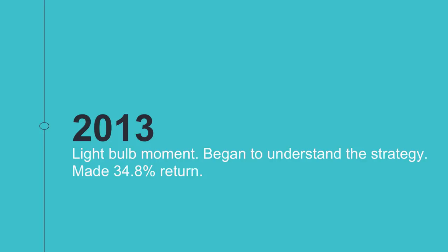2013 was my light bulb moment — when things really started to click for me. I began to properly understand the strategy I was trading. It was actually a visual chart called an R chart that really brought it home for me. Within a couple of weeks of the start of 2013, I became far more disciplined, because I understood why I wasn't doing as well as I wanted to. I'd actually been sabotaging everything myself — it wasn't the system that was at fault, it was me getting in the way of that system.